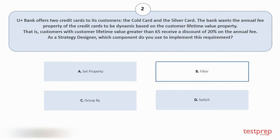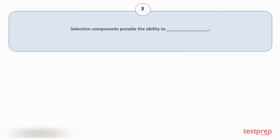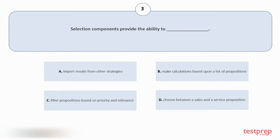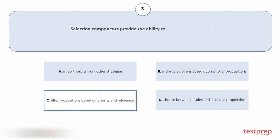Question number three: Selection components provide the ability to do what? Your options are: A) import results from other strategies; B) make calculations based upon a list of propositions; C) filter propositions based on priority and relevance; D) choose between a sales and a service proposition. The correct answer is option C.